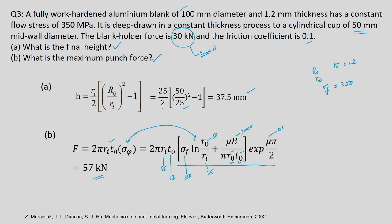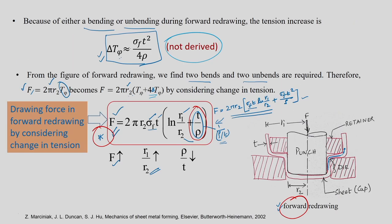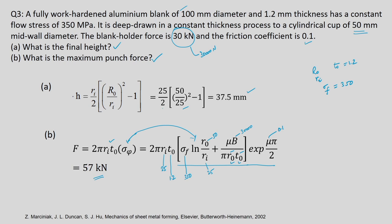Note that the punch force equation for conventional deep drawing was not explicitly derived in this course — only σ_phi (cup wall stress) was derived. The punch force F = 2π·r_i·t_naught·σ_phi uses that result directly. With this, we stop and move ahead to the next section.